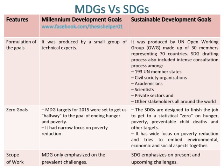Zero goals in MDGs — targets for 2015 were set to get us halfway to the goal of ending hunger and poverty. It had a narrow focus on poverty reduction. Whereas, zero goals in SDGs are designed to finish the job, to get to a statistical zero on hunger, poverty, preventable child deaths and other targets.